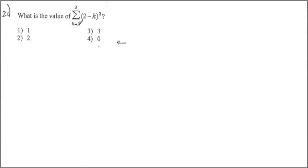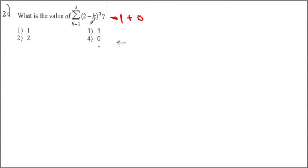Same thing here — k goes from 1 to 3. When k equals 1, we get 1. When k equals 2, we get 0. When k equals 3, we still get 1. Therefore our answer is 2.